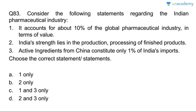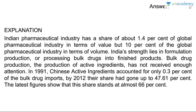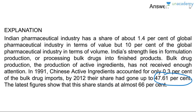Question eighty-three: the Indian pharmaceutical industry. It accounts for about 10% of the global pharmaceutical industry in volume — not value; in terms of value it is 1.4%. India's strength lies in production and processing of finished products — correct. Active ingredients from China constitute only 1% of India's imports — wrong; in 1991 it was 0.3%, by 2012 it was 47.6%, and latest figures show almost 66%. Answer is B, two only.